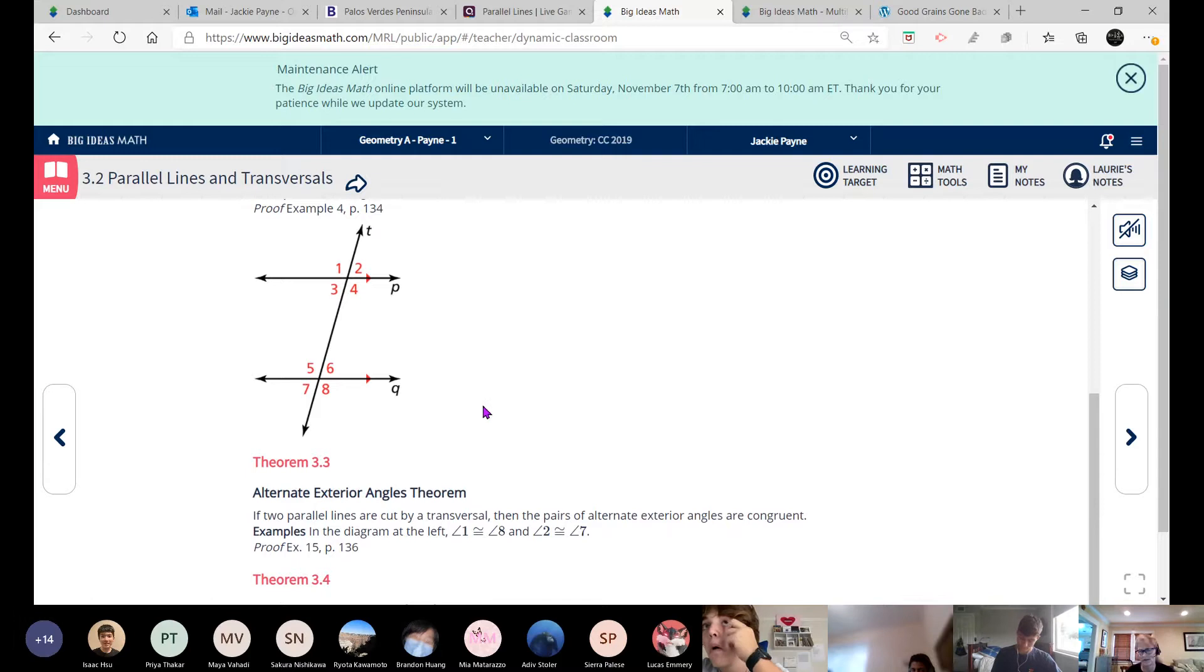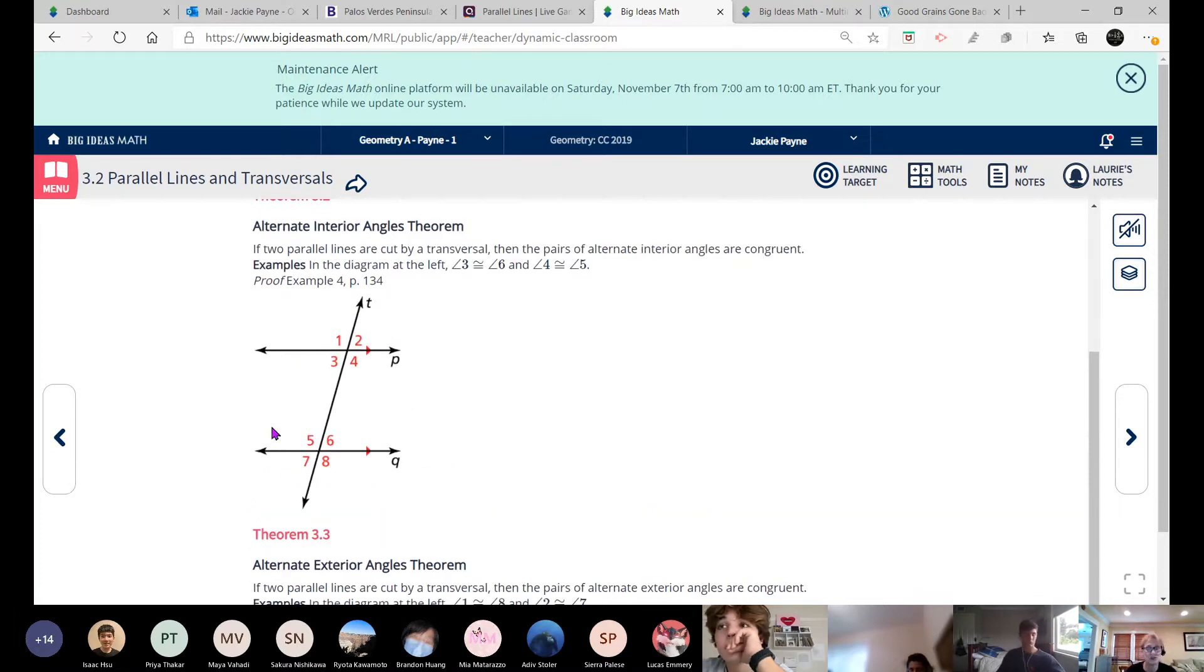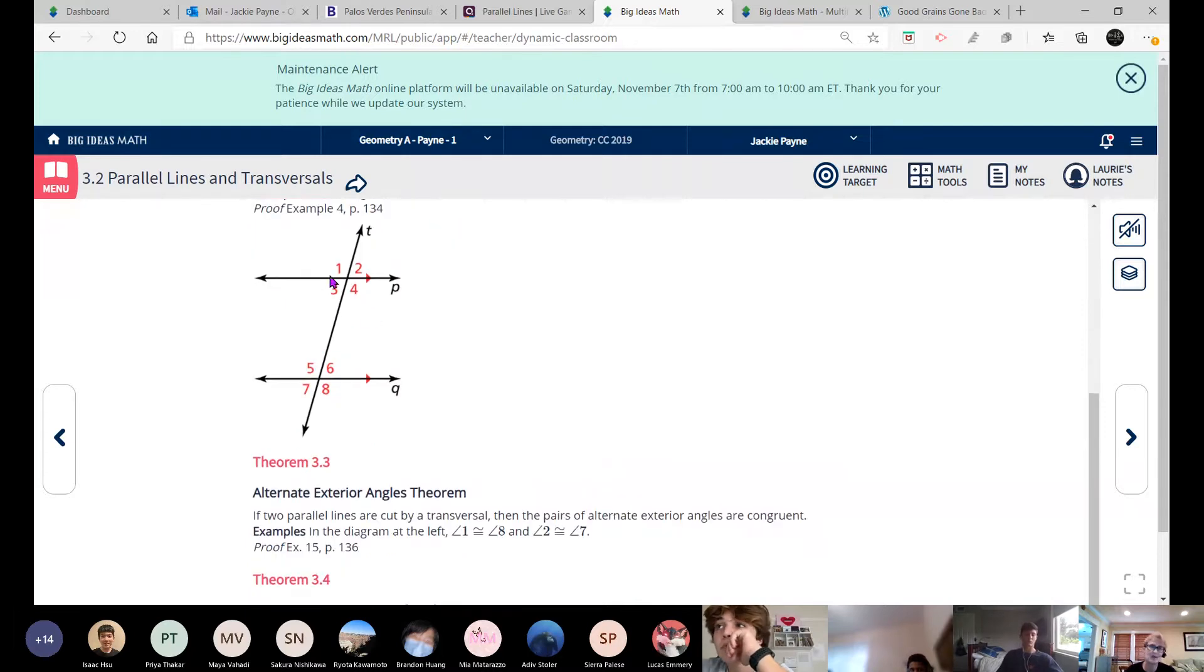But we already talked about these yesterday, so this shouldn't come as a surprise. And then theorem 3.3 is talking about exterior angles. So alternate exterior means opposite sides of the transversal and outside of P and Q. So the pairs of alternate exterior angles are one and eight, as well as two and seven. You know, if you look at these, don't the small ones all kind of look the same anyway? And the bigger angles look the same? So really, there's only two sizes of angles here if you look at it.